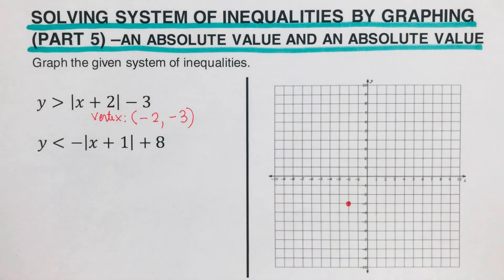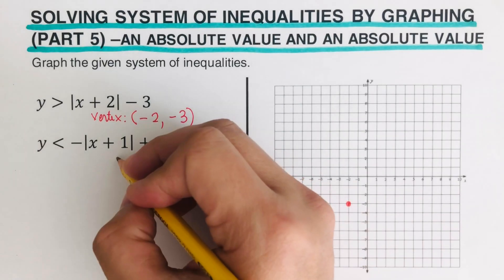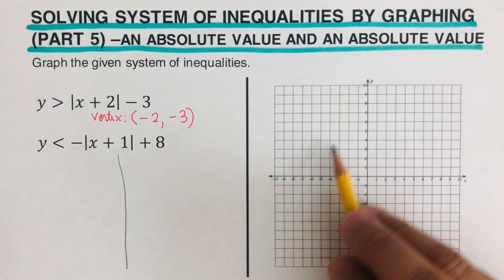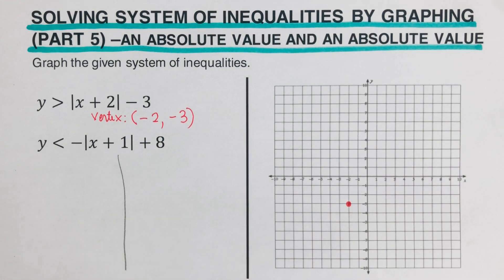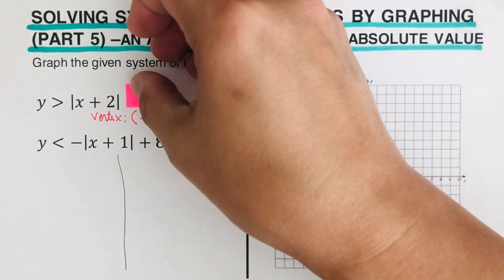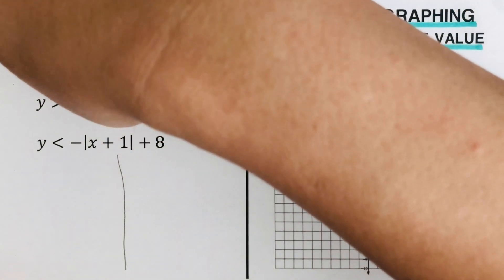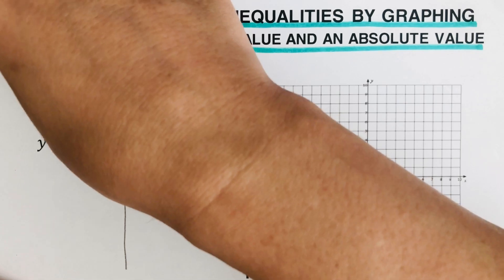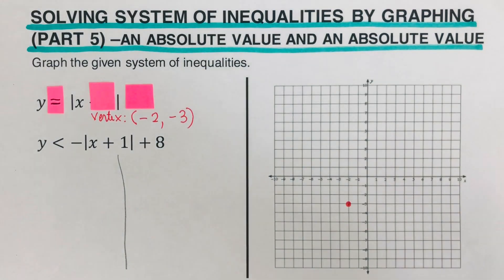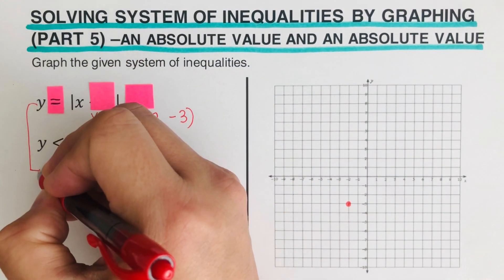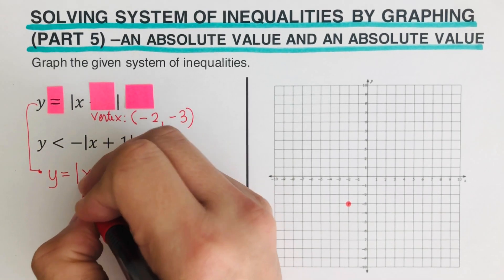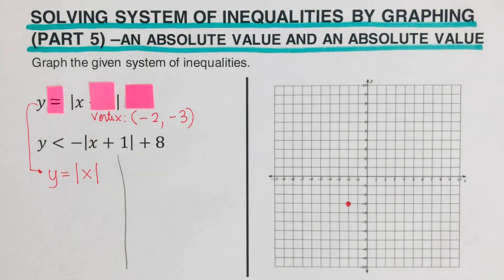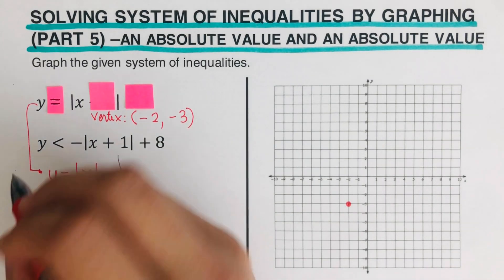In order to determine the rest of the dots, we use an equation. There's a trick: we cover the k, we cover the h, and then we change the inequality to equal. That is the equation we're going to use. So in this inequality, the equation we're going to use would be y equals the absolute value of x. From here, we are ready to create the table from the vertex.